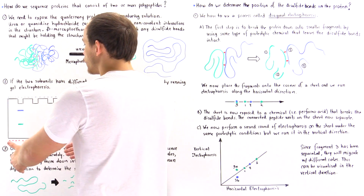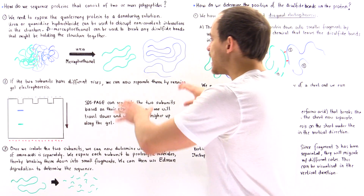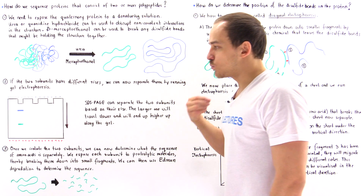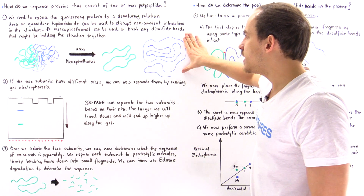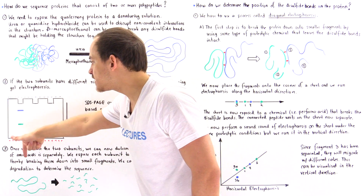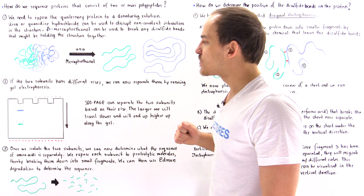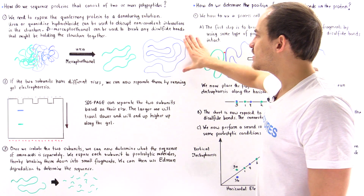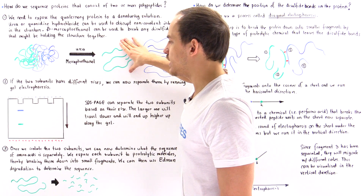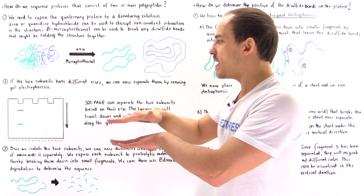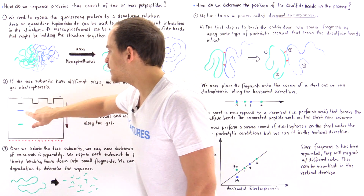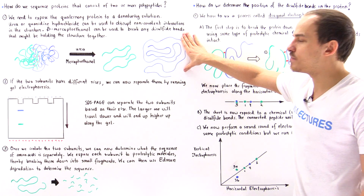Here we have the electrophoresis setup. We take the mixture of these two proteins, put them inside the well, and wait some time. Because the blue chain has a greater size, it will experience greater resistance as it travels down to the bottom of our gel. After some time passes, the blue chain will migrate less than the smaller green protein. So, we're going to form two bands: one band corresponds to the green protein, and the second band corresponds to the larger blue polypeptide chain.